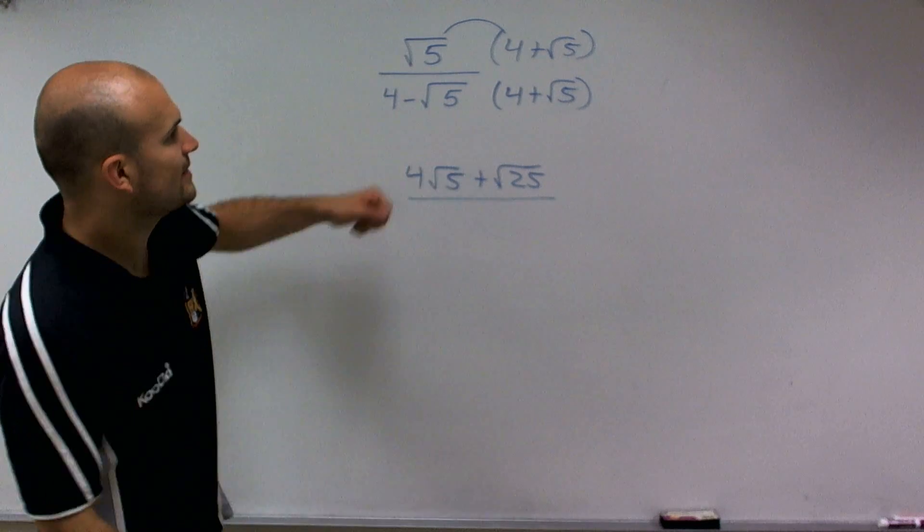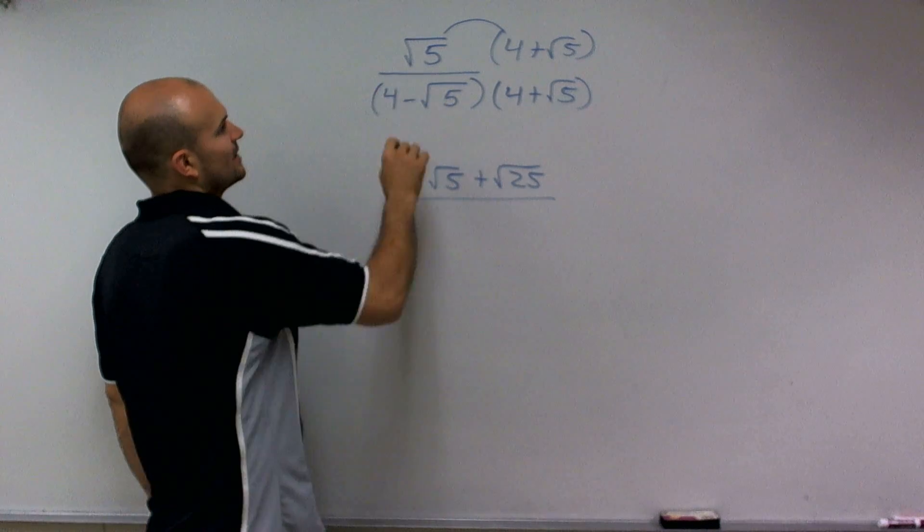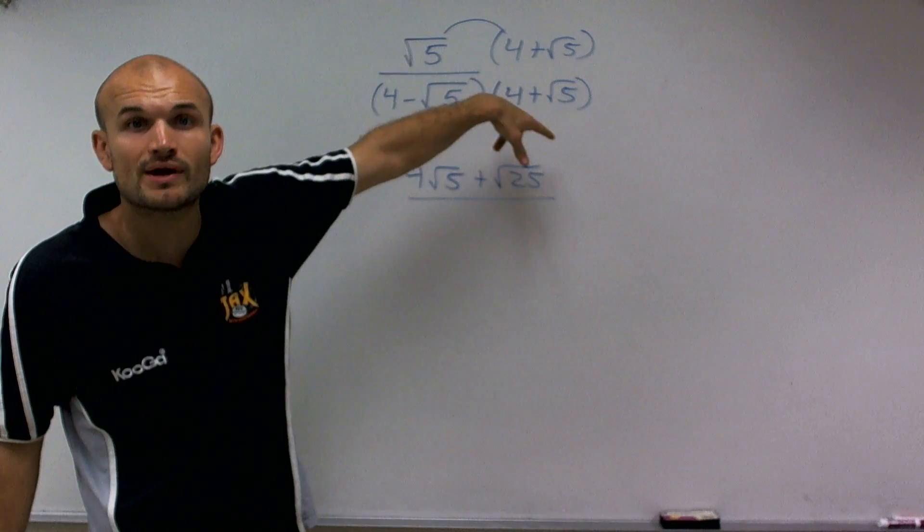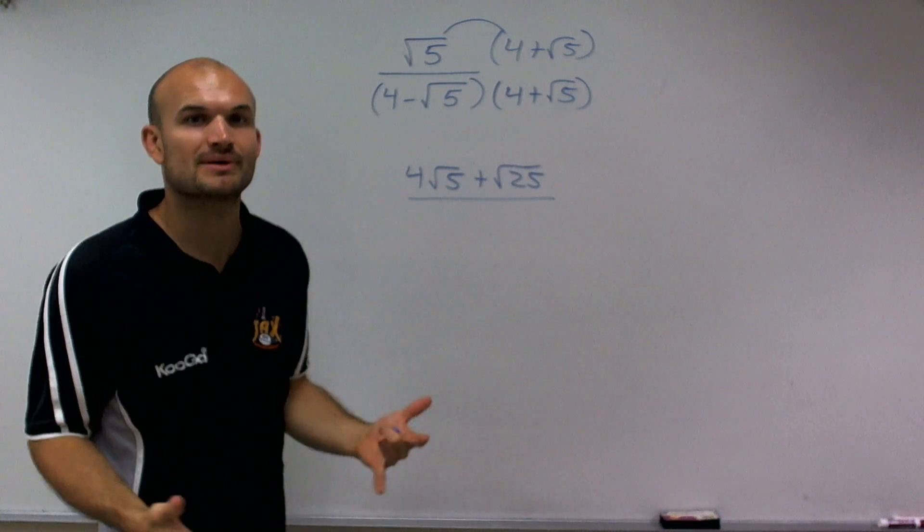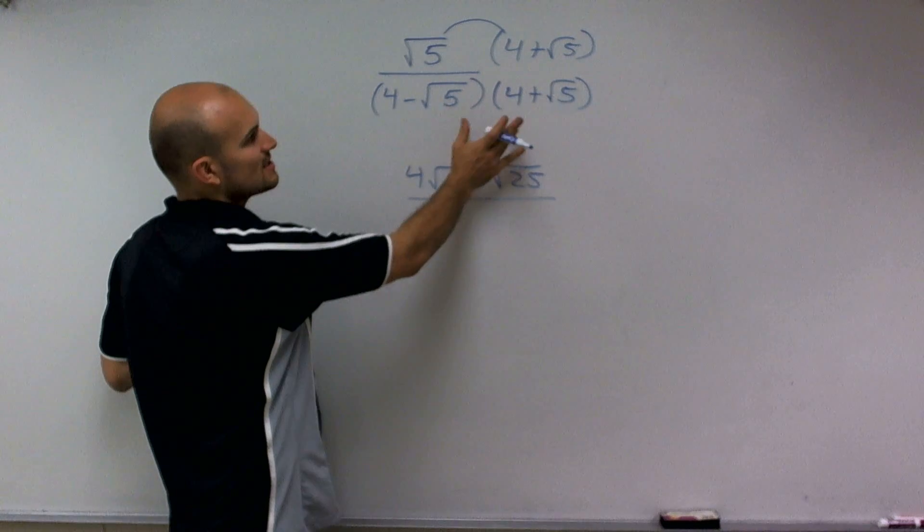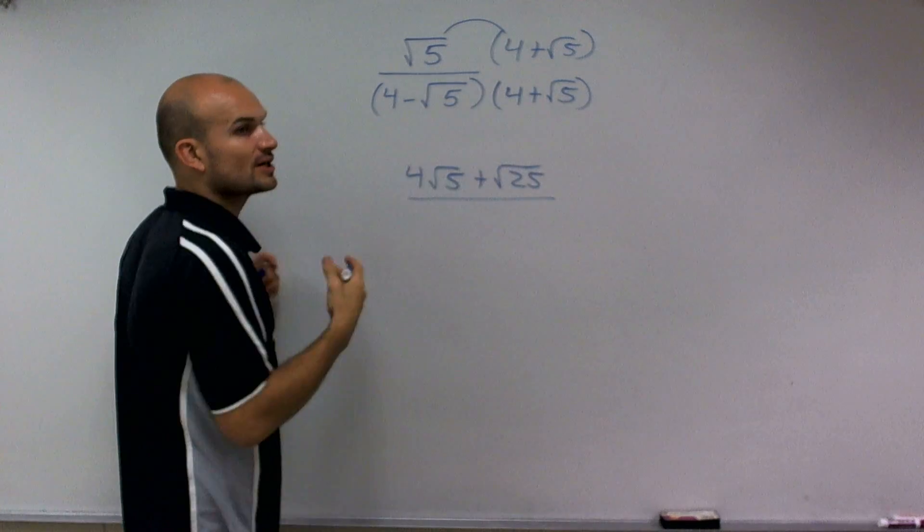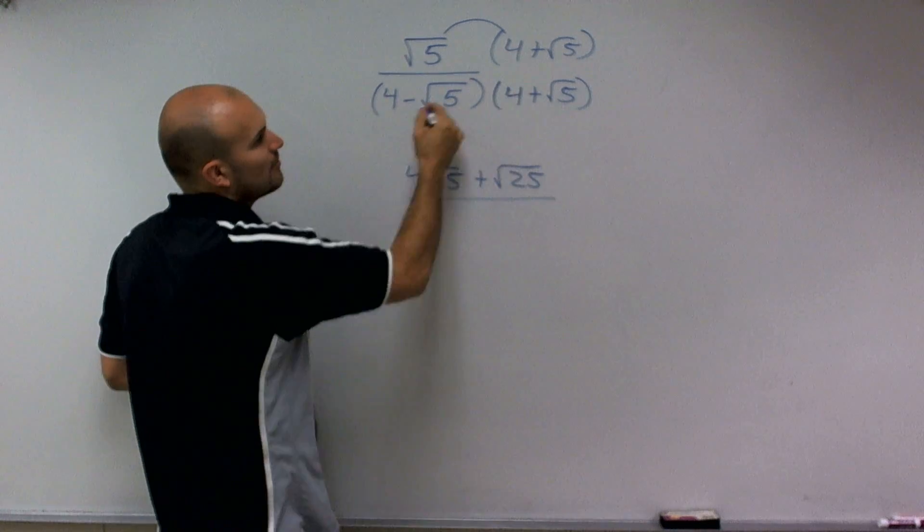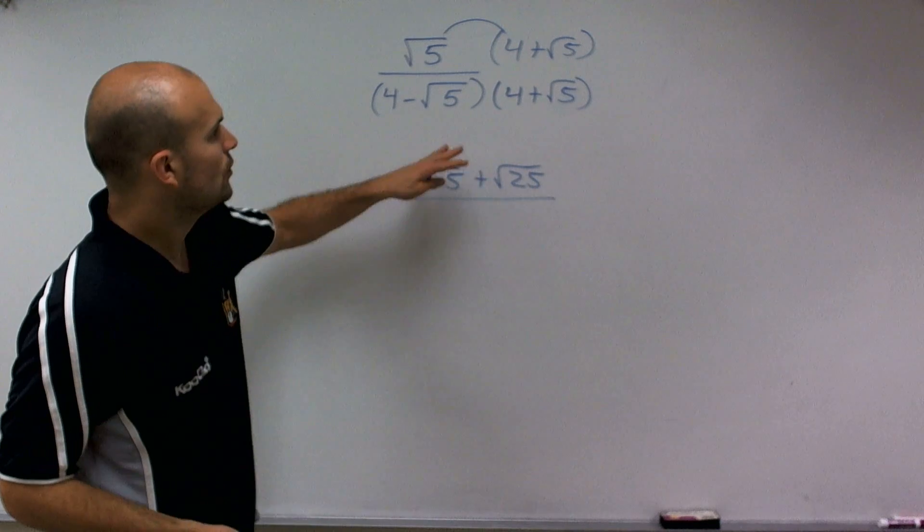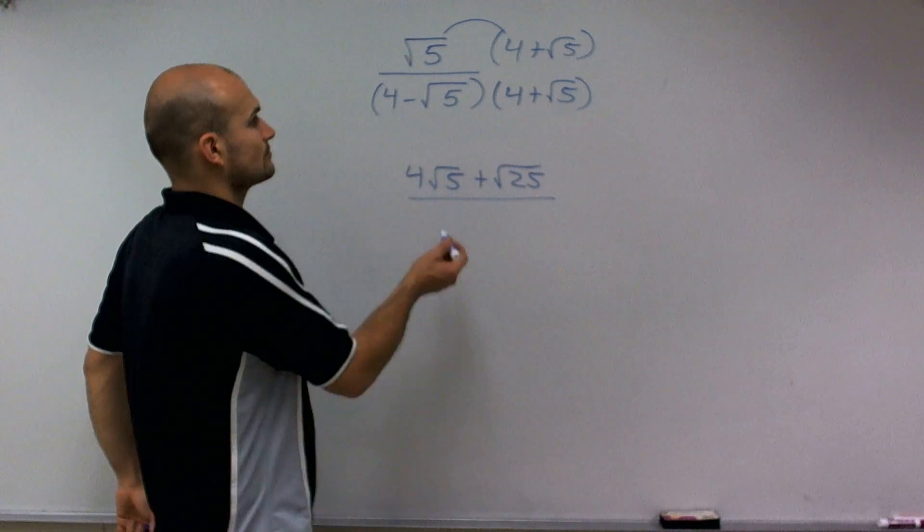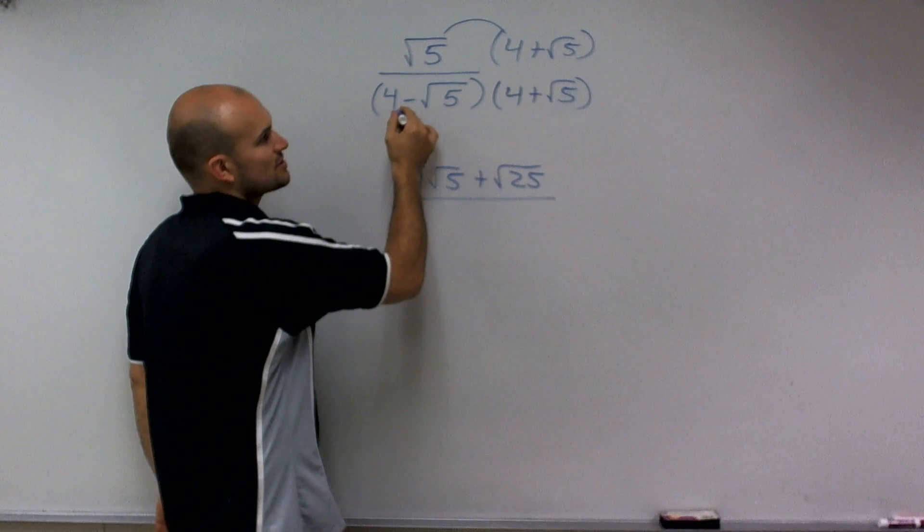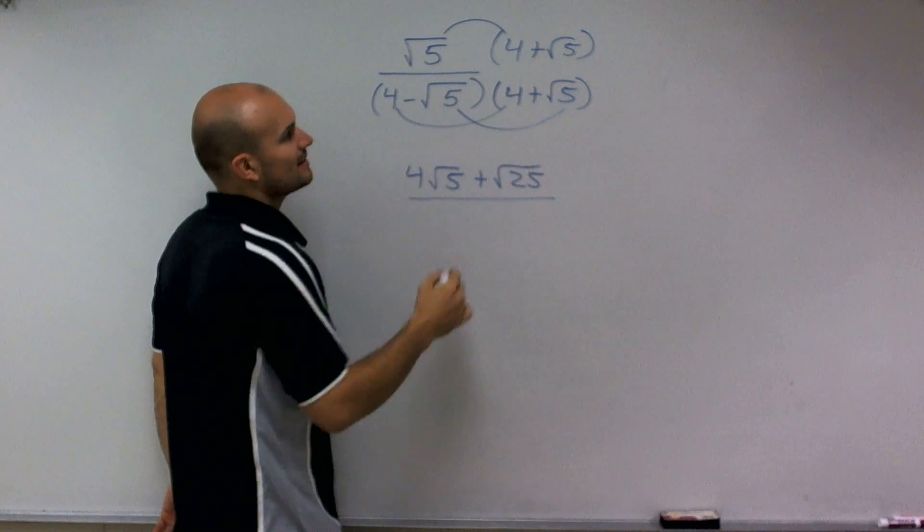So then, now here, this is very special because what I have here is a difference of two squares. That's why we multiply by the conjugate, because what that does is produces us a difference of two squares, which tells us that my middle terms are going to cancel out. When you do your multiplying by binomials, however you want to do it, foil, so forth, what will happen is your middle terms cancel out. So all I really can do is just multiply my first and my last two terms.